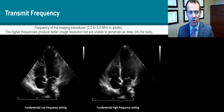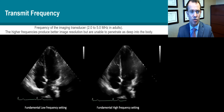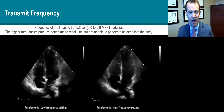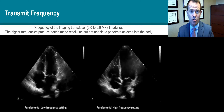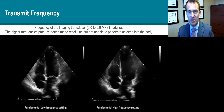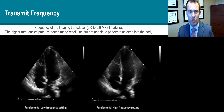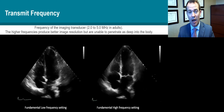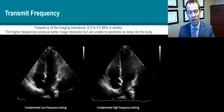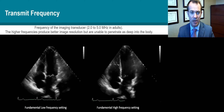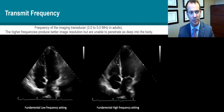The transmit frequency refers to the frequency of the imaging transducer, and these usually range between two and five megahertz in adults. We try to use the highest frequency possible because that gives us the best imaging resolution, but the higher the frequency, the lower the penetration into the body, so we have to consider that trade-off as we're imaging.